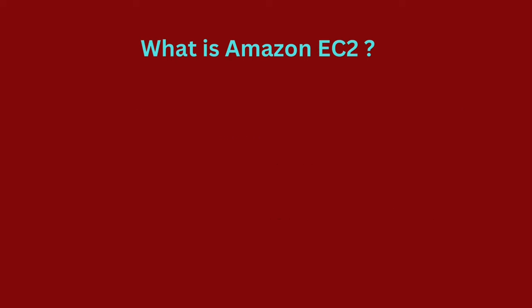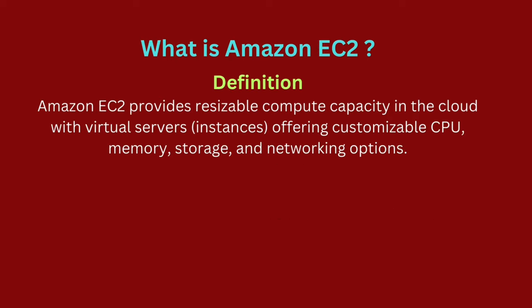EC2, which stands for Elastic Compute Cloud, is an AWS service that offers resizable compute capacity in the cloud. It allows you to launch virtual servers, known as instances, with customizable CPU, memory, storage, and networking configurations. EC2 supports scalable application deployment, operates on a pay-as-you-go model, and provides granular control over computing resources for efficient application hosting.